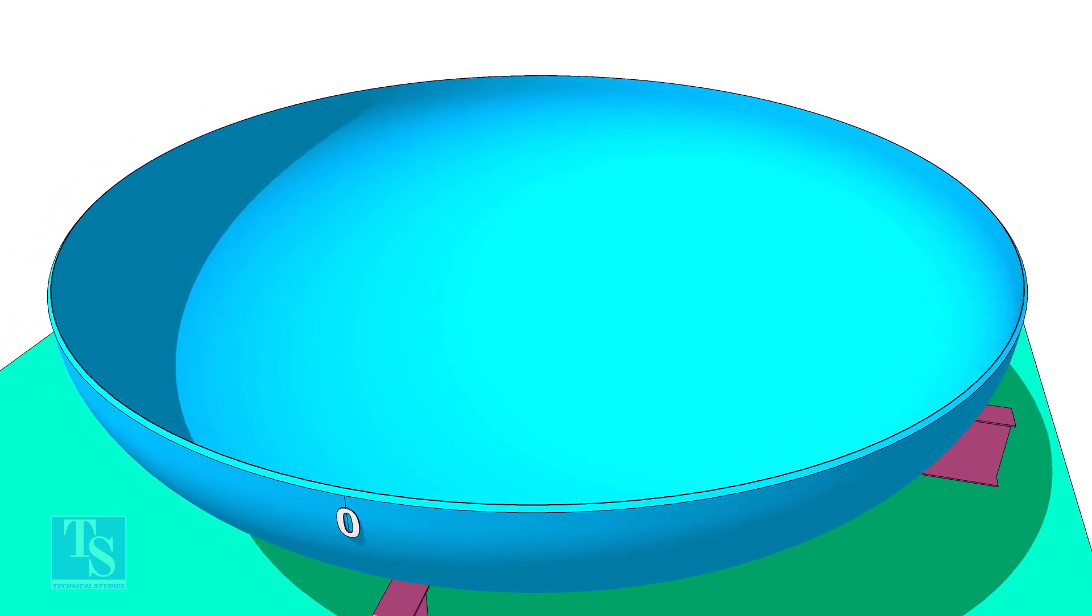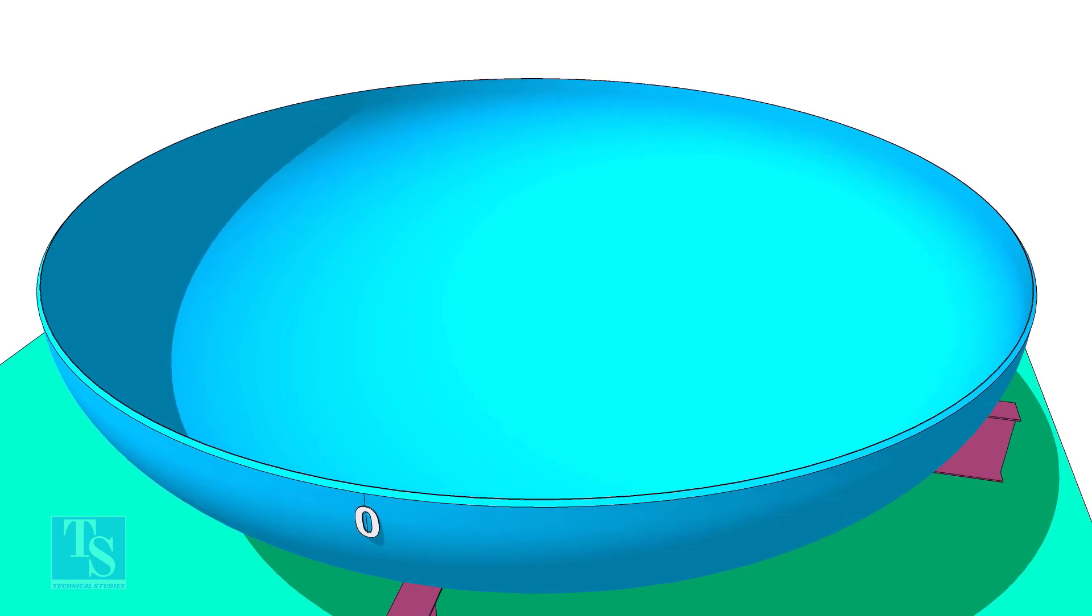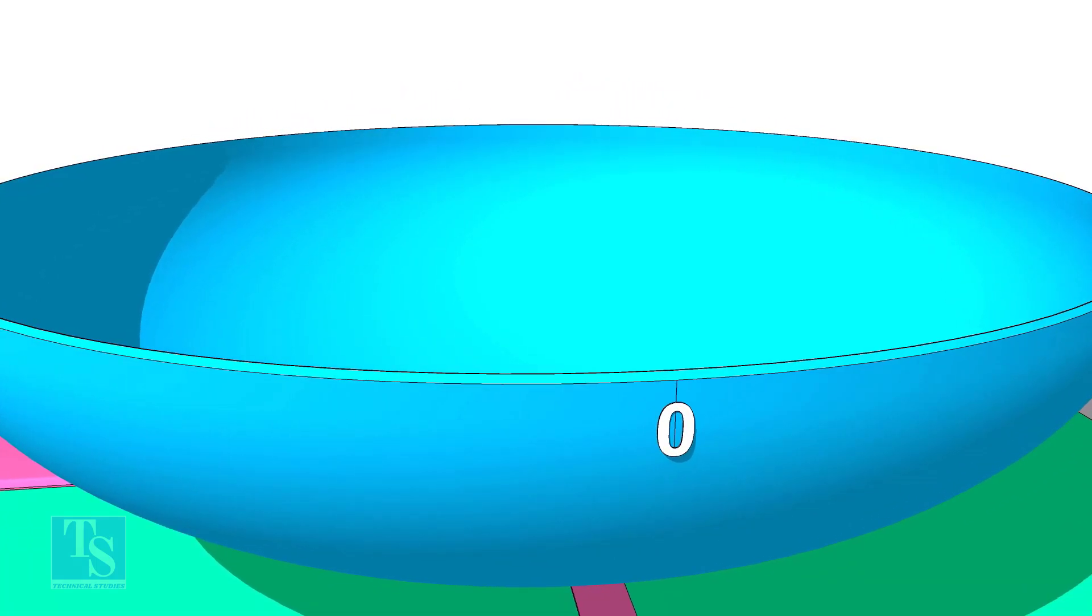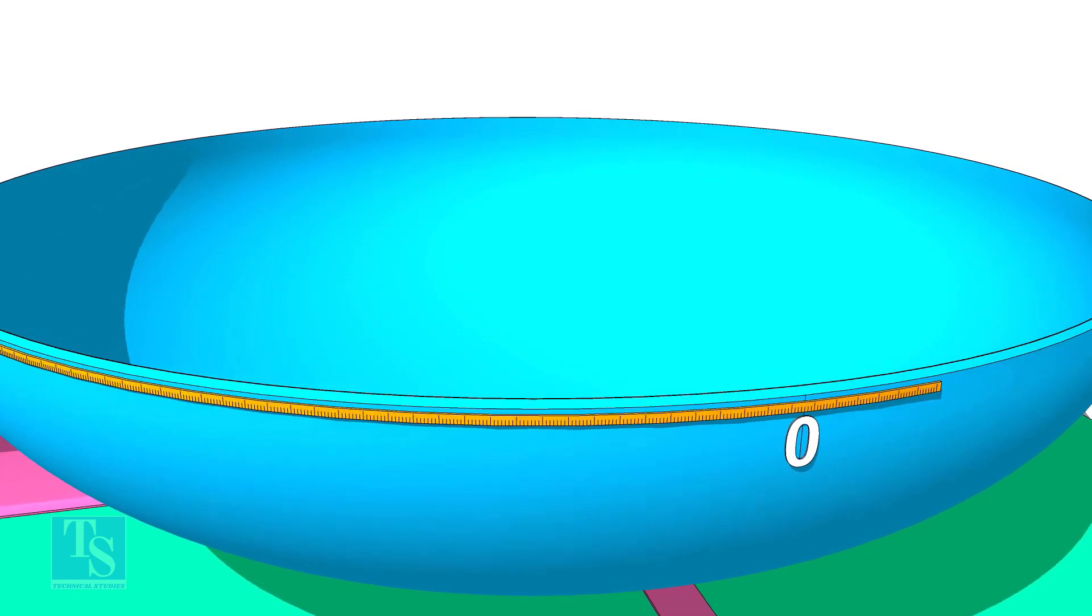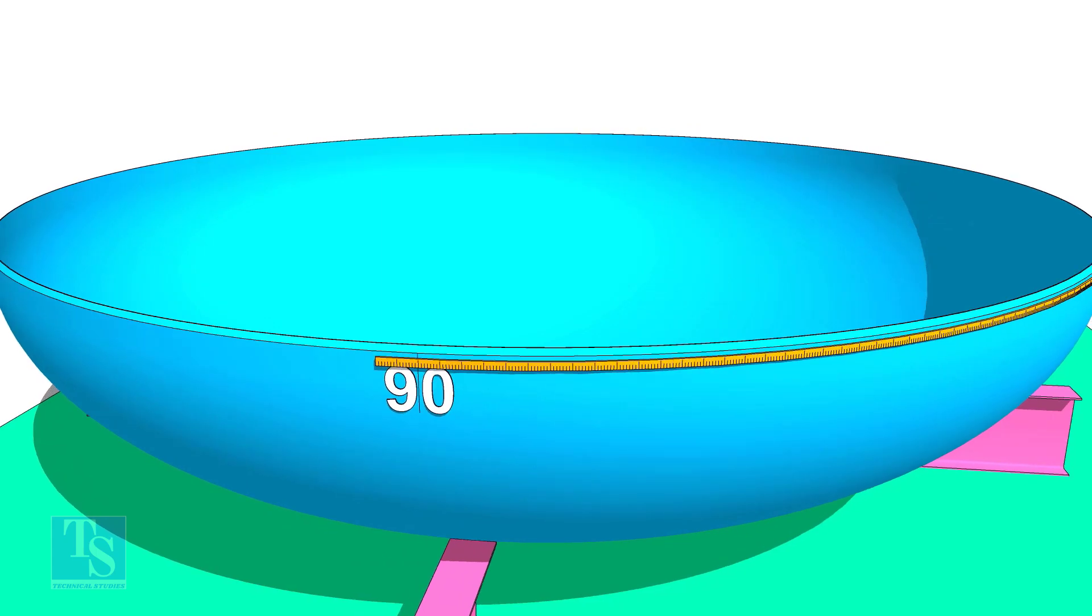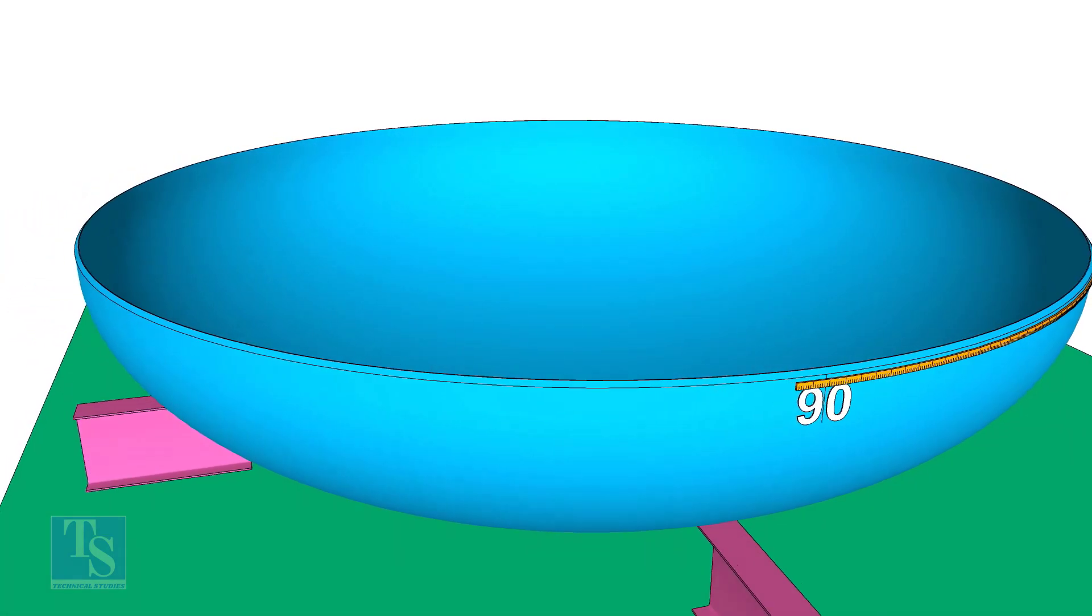Draw a line 0 at the edge of the dish end as shown. From the 0, mark the quarter length of the dish circumference and mark it as 90 degree. Similarly, mark the 180 and 270 degrees.